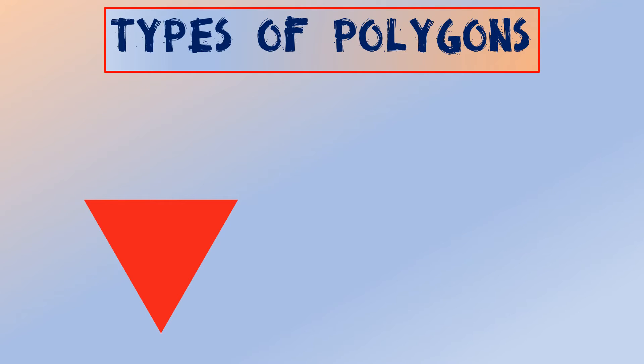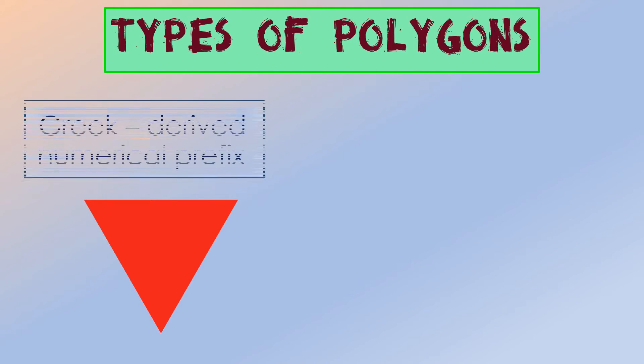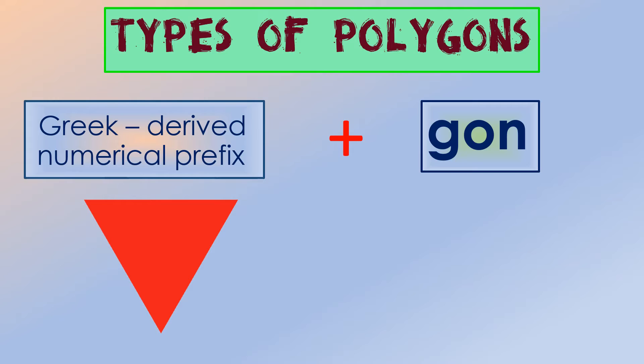There are several types of polygons which are usually named according to the number of sides. It is done by combining a prefix, which is a number derived from a Greek word, and with the suffix gon. Since a polygon is a closed figure, the least number of sides which a polygon can have is three.